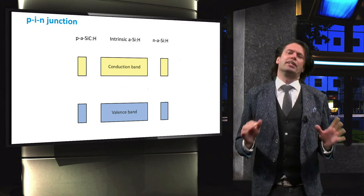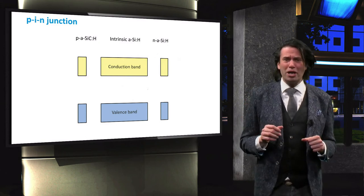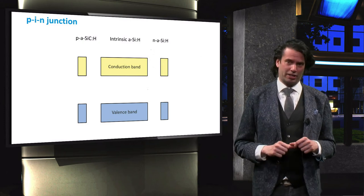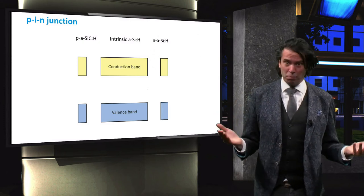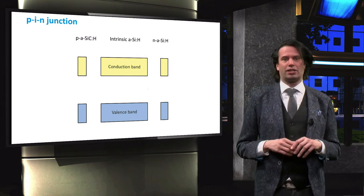While the intrinsic layer is several hundreds of nanometers thick, the doped layers are only about 10 nm thick. Between the p- and n-doped layers, a built-in electric field is created across the intrinsic layer.